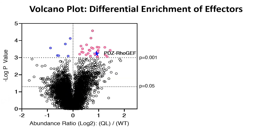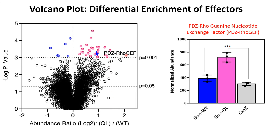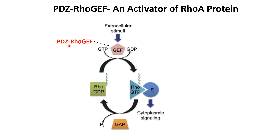If we look at the mass spec data represented by a Volcano plot, proteins on the right are enriched in QL samples as compared to wild-type. The protein I am investigating is PDZ-RhoGEF, which is enriched in QL samples as compared to wild-type and controls. PDZ-RhoGEF is a guanine exchange factor for Rho, meaning it activates Rho, and activated Rho is involved in cytoskeleton reorganization and cell adhesion and migration.